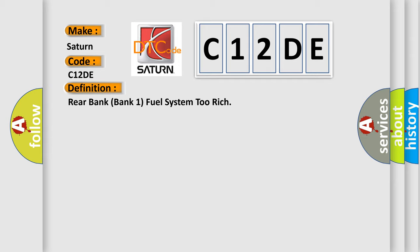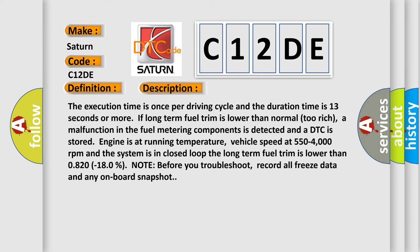And now this is a short description of this DTC code. The execution time is once per driving cycle and the duration time is 13 seconds or more if long term fuel trim is lower than normal, too rich. A malfunction in the fuel metering components is detected and a DTC is stored. Engine is at running temperature, vehicle speed at 550 to 4000 revolutions per minute, and the system is in closed loop. The long term fuel trim is lower than 0.820 minus 180 percent.